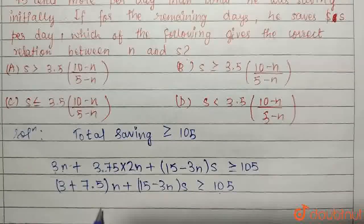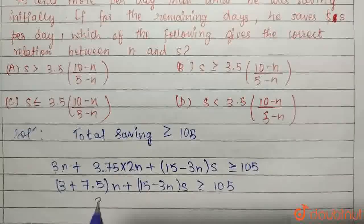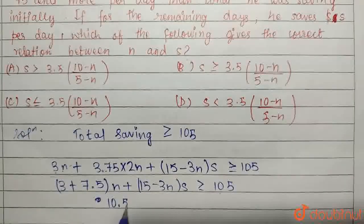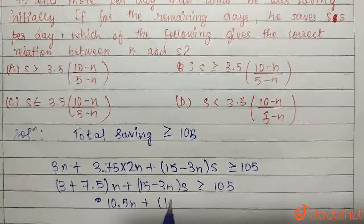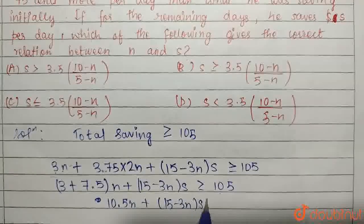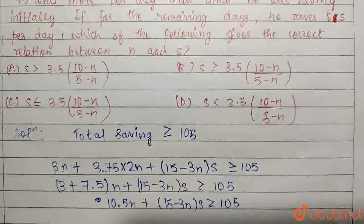Adding it, I can get 10.5N plus 15 minus 3N, S greater than or equal to 105.